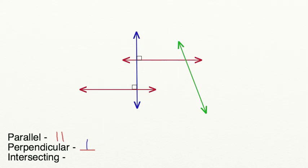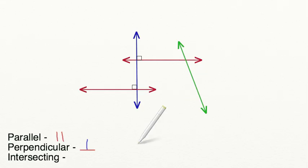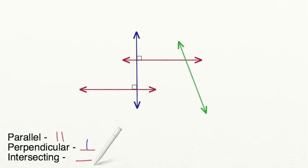Lastly, we're going to try to find intersecting lines. Intersecting lines just have to have at least one point where they meet. As we can see, this green line is intersecting this red line. I'm going to draw my red line, and then my green line intersecting it.